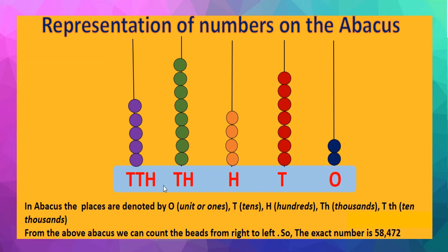As you can see, each spike has some beads. We can count the beads from right to left. Now count the beads of the ones place spike: one, two. So it consists of two beads.